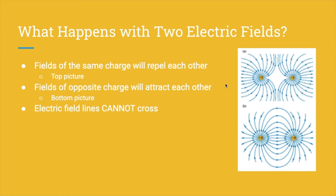Now you might ask, what happens if I bring in a positive and a negative charge and put them close to each other? Or a positive and a positive? Or a negative and a negative? Well, there are some rules with that too. You probably already know that opposites are going to attract, and the same charges are going to repel each other. The top picture shows two negative charges repelling each other — it's the exact same for two positive charges. Picture B shows two charges of the same magnitude, one positive and one negative, and you can see that they attract. One big takeaway here is that electric field lines cannot cross.